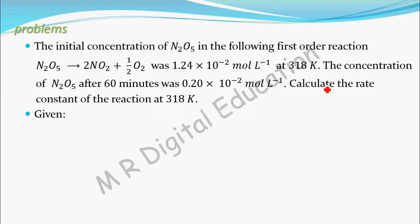Let's try to write what is given. Initial concentration, that is R0, equals 1.24 × 10^-2 mol per liter.